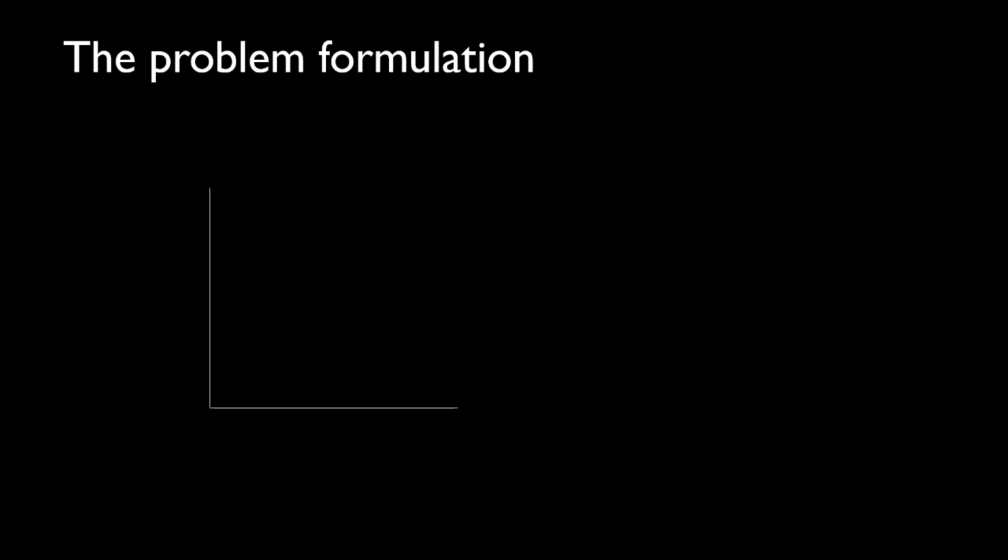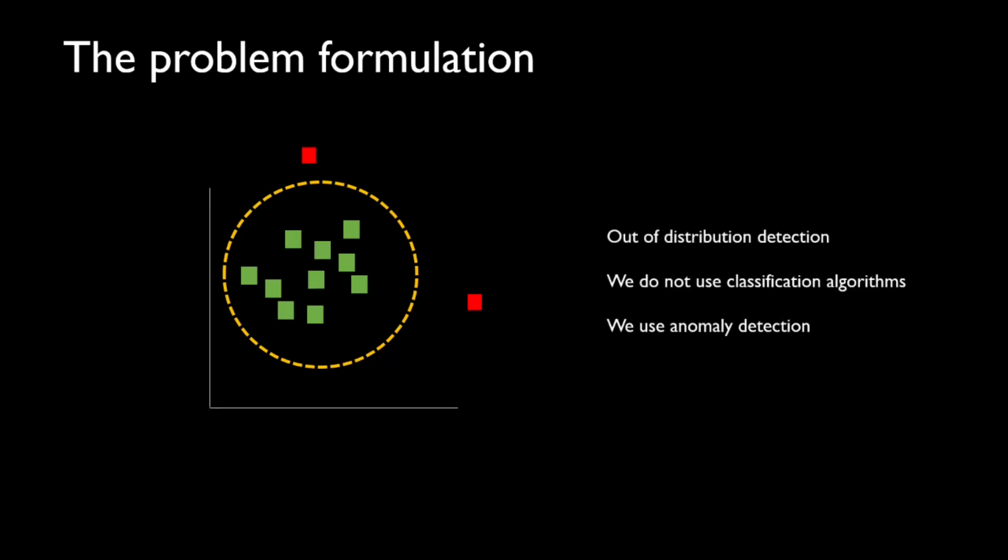So now what is the problem formulation? So these green squares represent our normal data. And we want to create a model which learns this boundary that if the model encounters an abnormal data, it can flag it as an anomaly. That's it. This is also known or called as out of distribution detection, novelty detection. In this case, we do not use a classification algorithm. Instead, we call it an anomaly detection method.